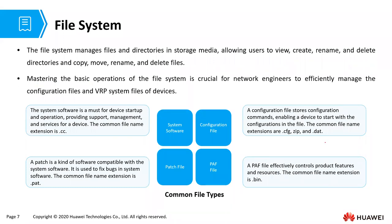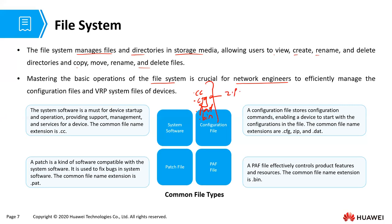VRP has a file system that manages files and directories in storage media, allowing users to view, create, rename, and delete directories, and copy, move, rename, and delete files. Mastering the basic operations of the file system is crucial for network engineers to efficiently manage configuration files and VRP system files of devices. We have mainly four types of files that VRP handles: the .cc file, the .cfg file, the .pat, and the .bin. The .cfg is sometimes .zip or .dat.